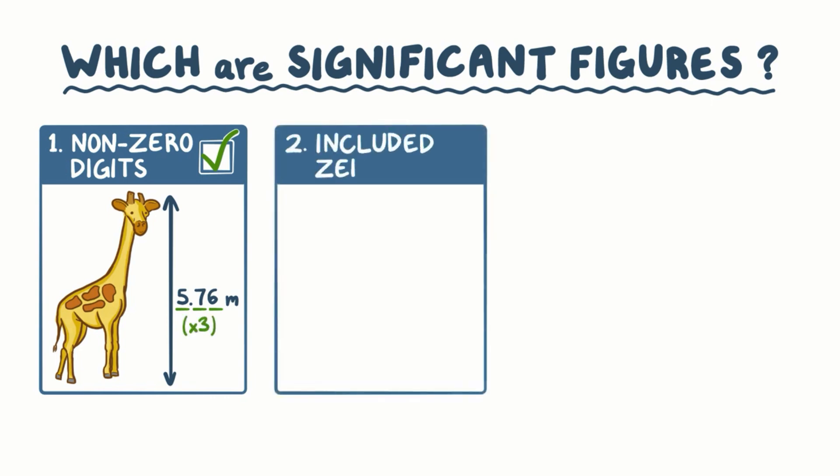Rule 2 is that included zeros are always significant. So if the measurement is 1.076 meters, then we have an included zero in the middle of the measurement, and the surrounding digits are non-zero, in this case the 1 and the 7. So there are four significant figures. Another example is the number 2035. This included zero is significant because the surrounding digits are non-zero, in this case the 2 and the 3. So there are four significant figures.